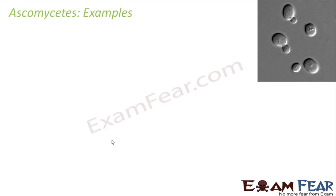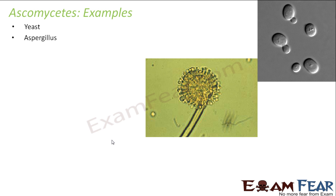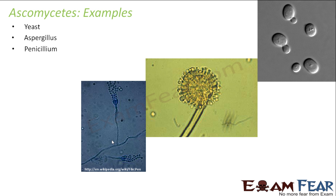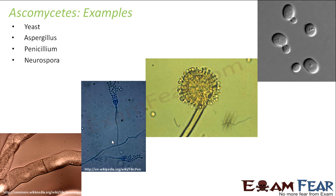Examples of ascomycetes include yeast, Aspergillus, Penicillium — which is known to produce the antibiotic penicillin — and Neurospora, commonly called the red bread mold. Under the microscope, you can see detailed structures including spore formation in Penicillium, and Neurospora's mycelium with walls dividing it into sections.